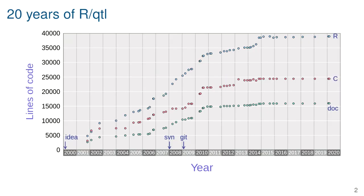I've primarily been focusing on one package for R called RQTL. I've been working on it for 20 years — the idea came in early 2000, really about the time that version one of R came out. At the time I had no idea what I was getting into, and I think if I did know I might not have embarked on this. It's grown to close to 40,000 lines of R code and nearly 25,000 lines of C code.